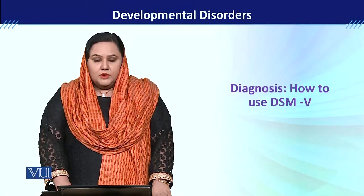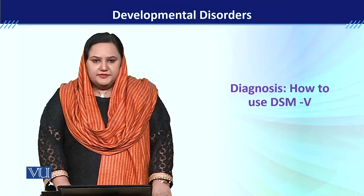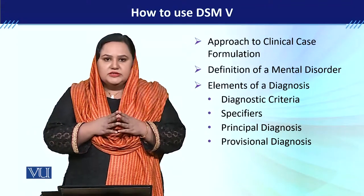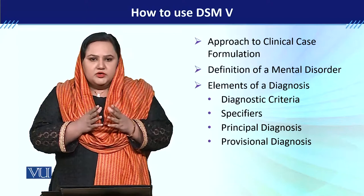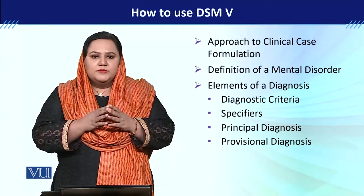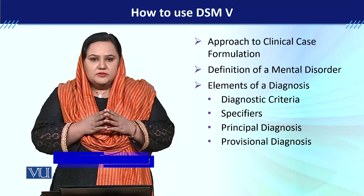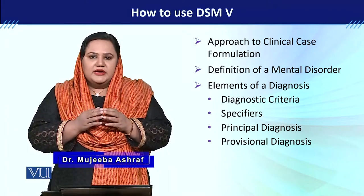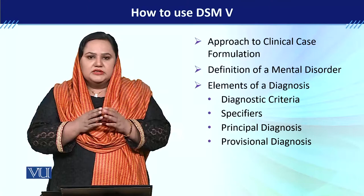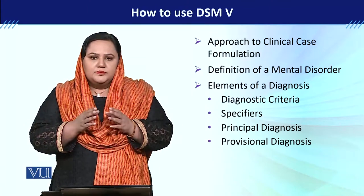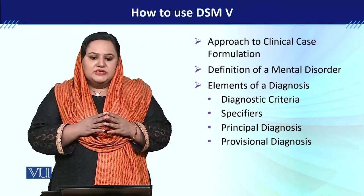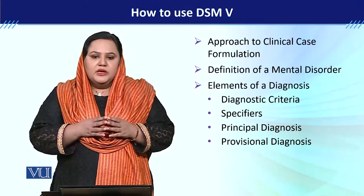Module 32: Diagnosis - How to use DSM-5. When we talk about diagnosis, we talk about DSM-5 because most psychologists use DSM-5 for making the diagnosis of a client. DSM-5 stands for Diagnostic and Statistical Manual of Mental Disorders. Before DSM-5, there were many versions like DSM-4TR, DSM-3TR, and since 2013 we have been using DSM-5.